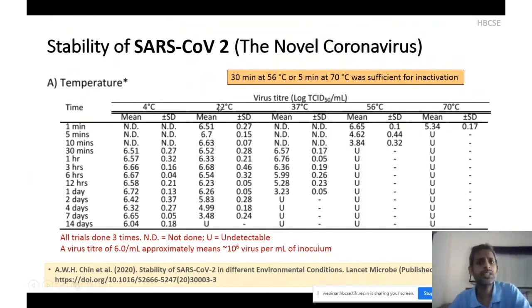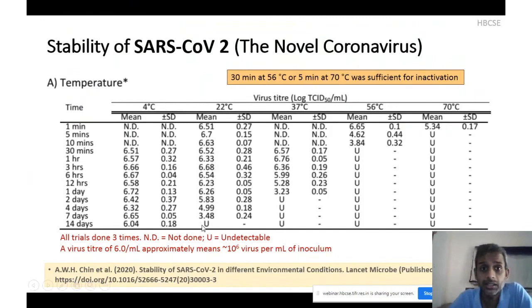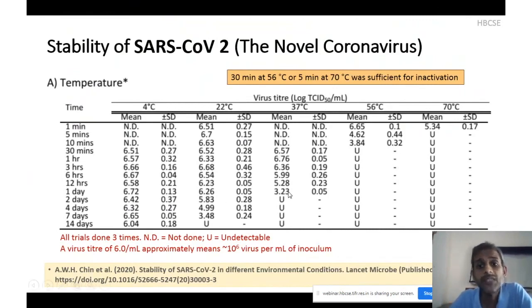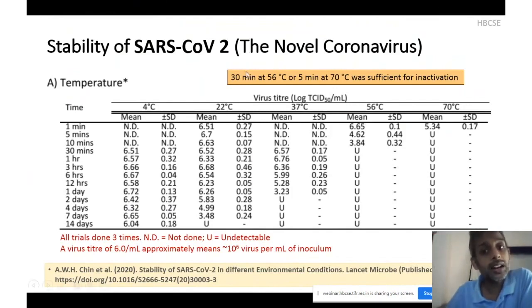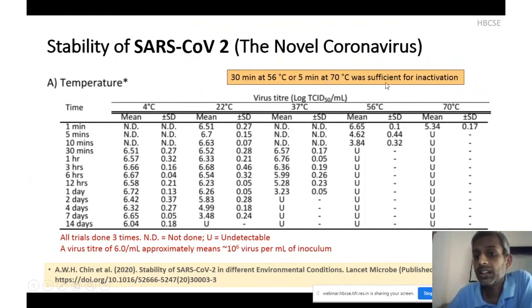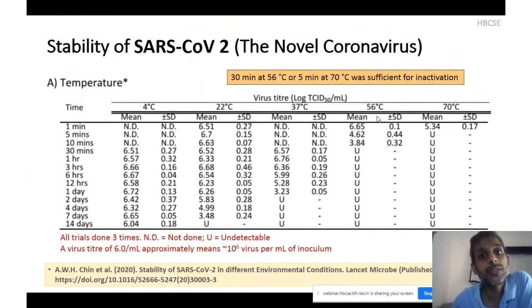At 22°C — a temperature we are typically comfortable at and set for air conditioning — the virus titer was detected for at least 7 to 10 days, meaning the virus was stable under these conditions. At 37°C the virus was stable for about one day. At 56°C the virus was stable for about 15 to 30 minutes. At 70°C the virus was completely inactivated in less than 5 minutes — relatively easier to inactivate than SARS-CoV-1, which required at least 15 to 30 minutes.